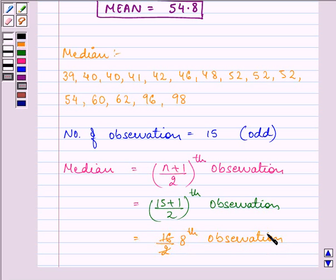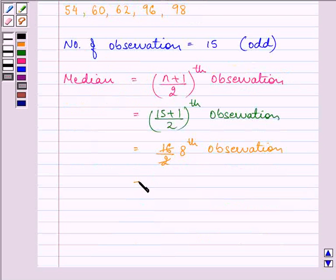So the 8th observation here is 1, 2, 3, 4, 5, 6, 7, 8. That is equal to 52. So the median of this given data is equal to 52.